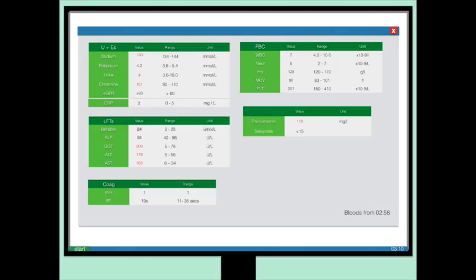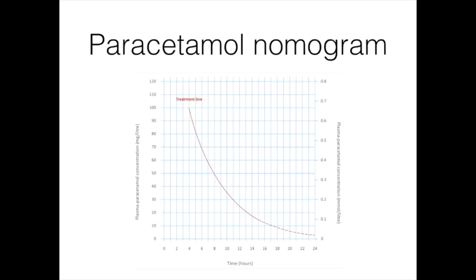Now we know these bloods were taken at 3 o'clock in the morning and that Gemma took the paracetamol around 6 o'clock so that's 9 hours ago. Using this information we can plot this on the paracetamol nomogram to assess whether Gemma will require N-acetylcysteine and indeed doing this demonstrates that she does. I appreciate here that the graph line only starts from beyond 4 hours reflecting what I mentioned earlier.